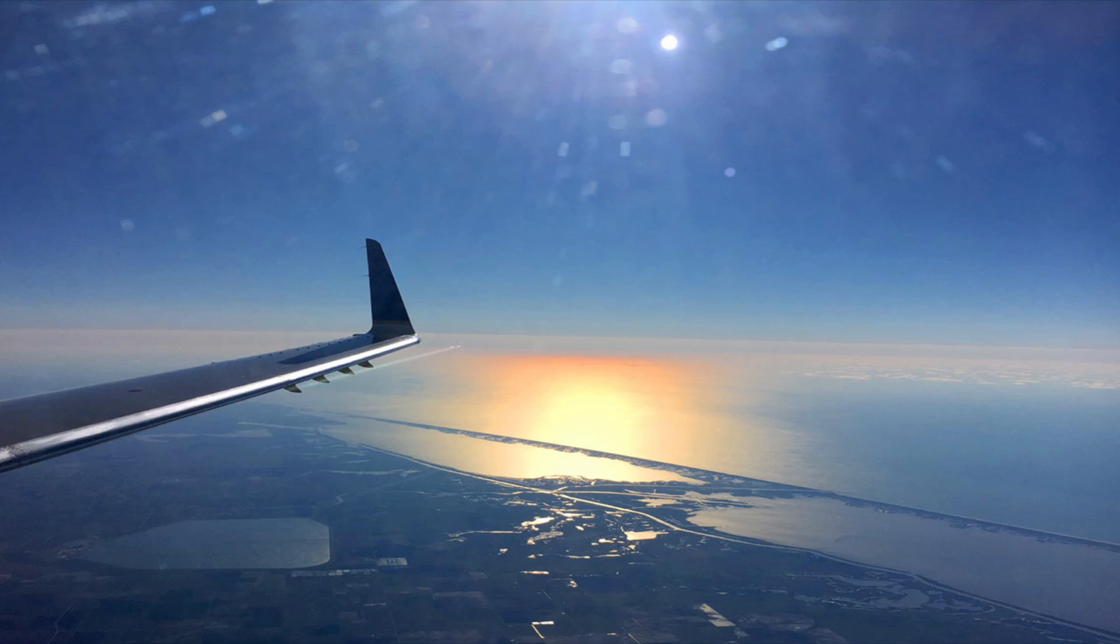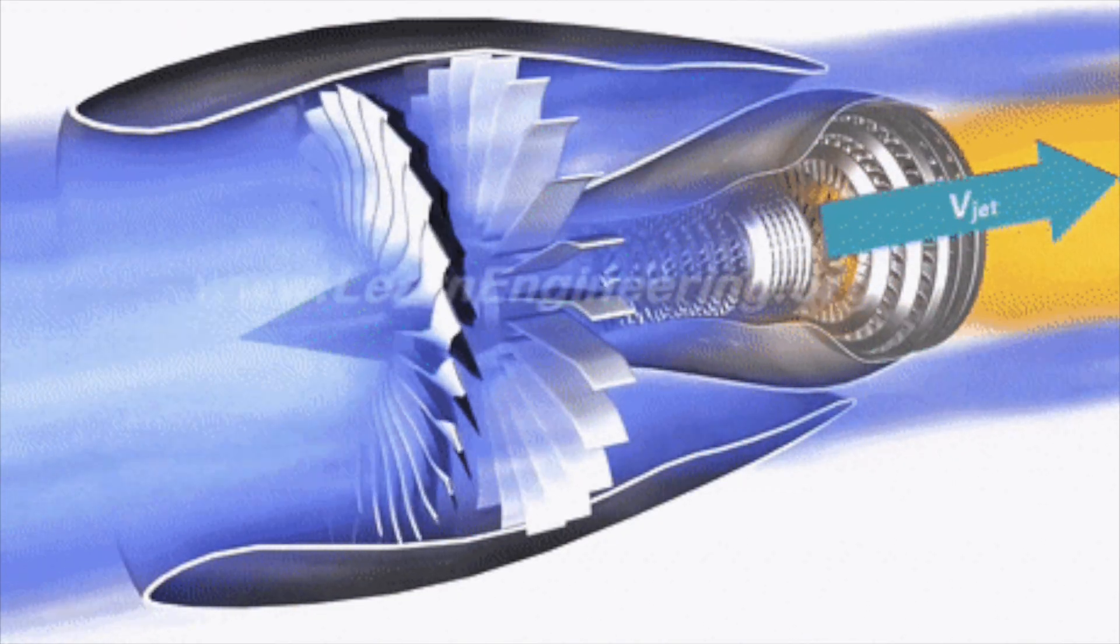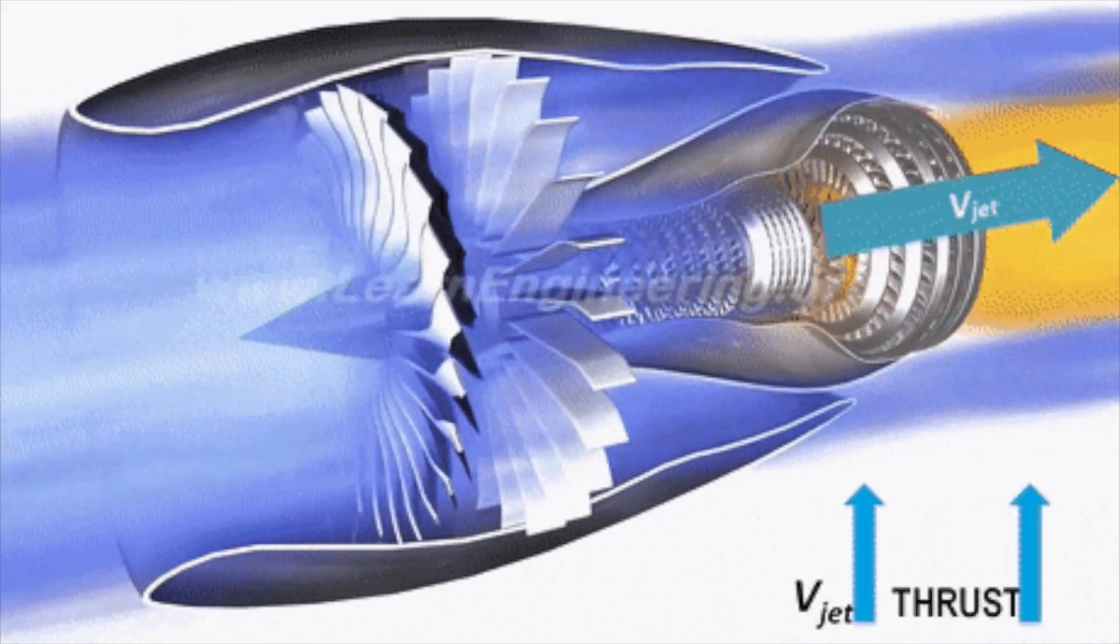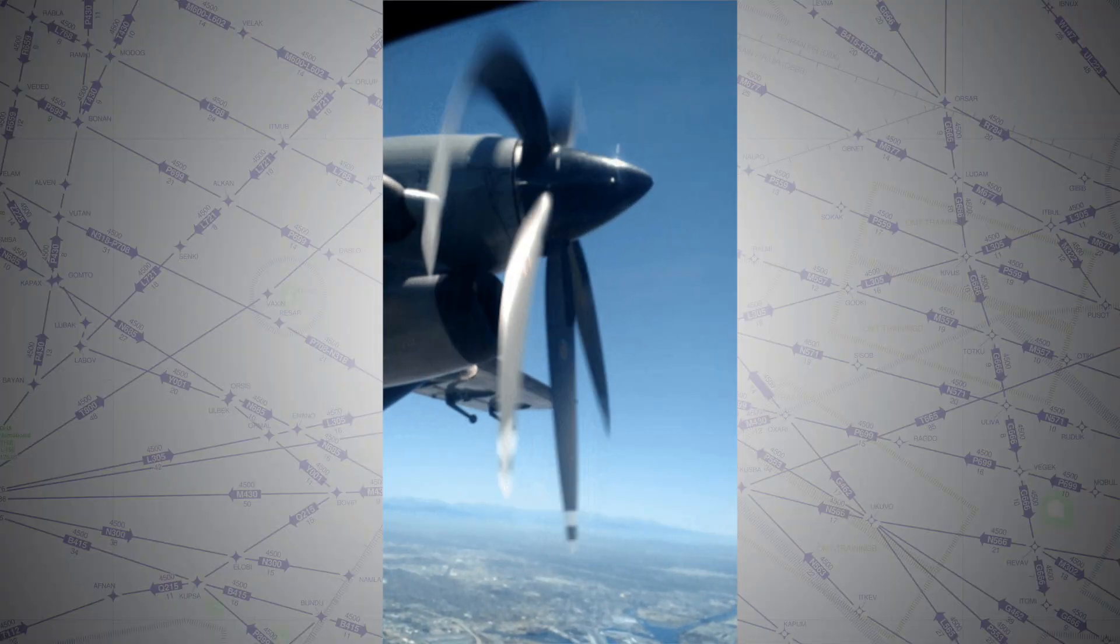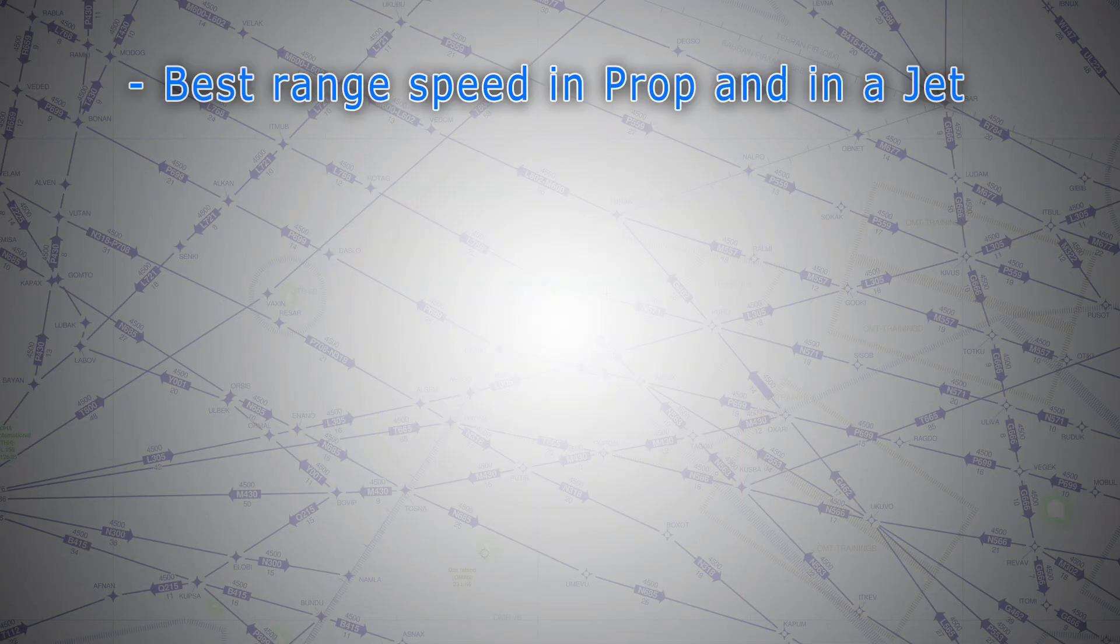And it all comes down to the difference between power and thrust. Jet engines create thrust, and propeller spinning engines, reciprocating or turboprop, create power. That changes best range performance dramatically.